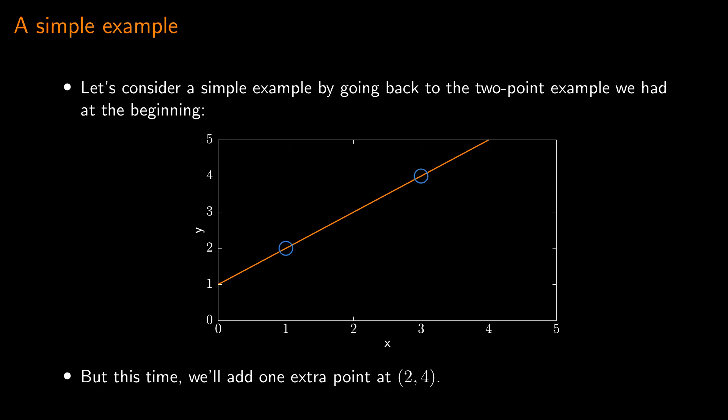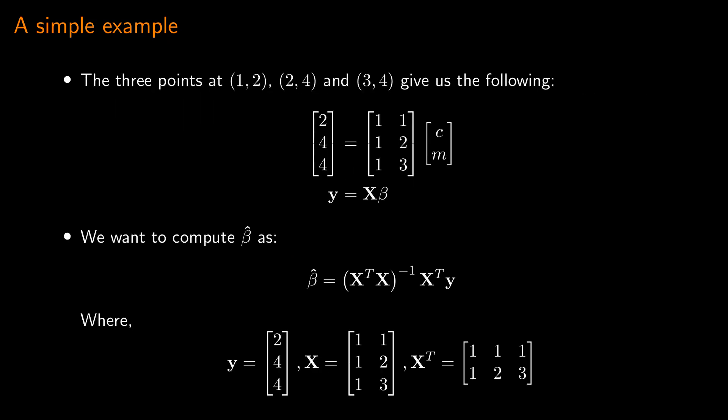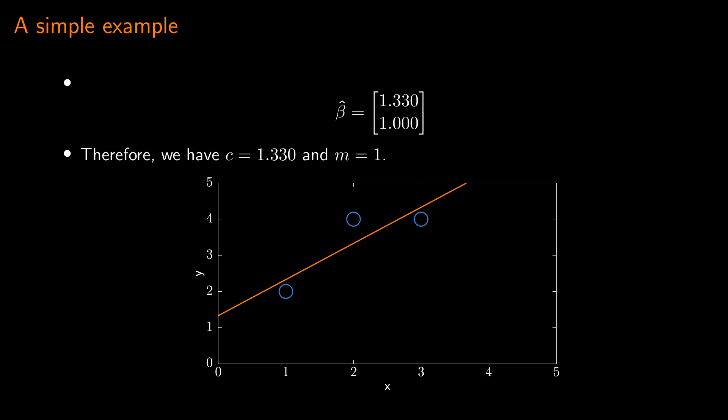Let's consider a simple example: we take the previous two-point example and add one extra point at (2,4). We use linear regression to compute the line of best fit between these three points. The three points give us the system y equals x·beta. We compute beta-hat according to the linear least squares equation using y, x, and x-transpose. Working through step by step — first computing x-transpose·x, then finding its inverse, then multiplying by x-transpose — we get estimated values for c and m of 1.333 and 1.000 respectively. Plotting those along with the three points confirms this is indeed the line of best fit.